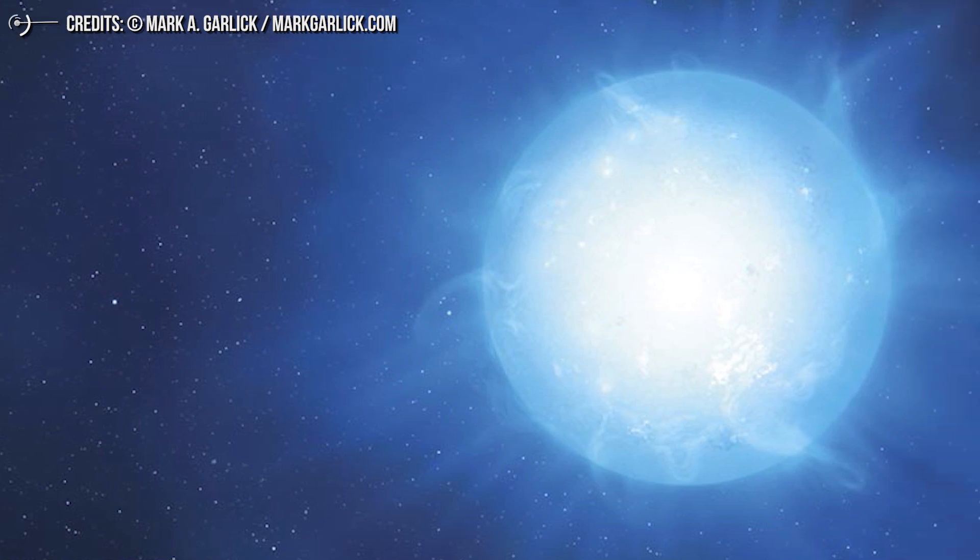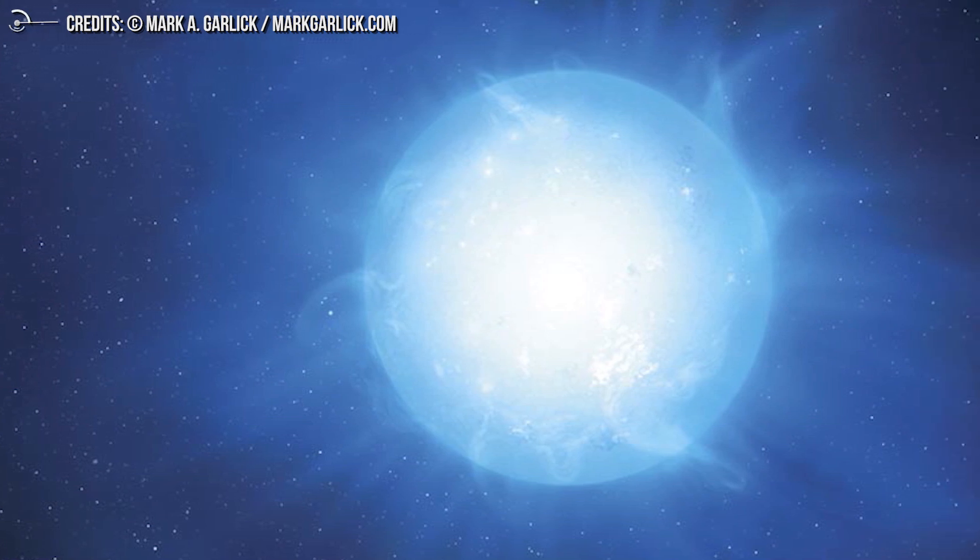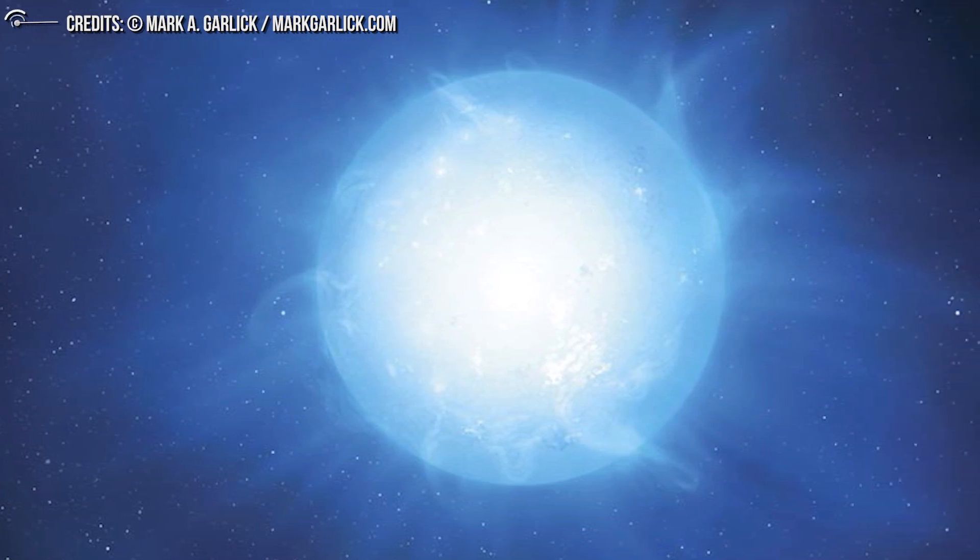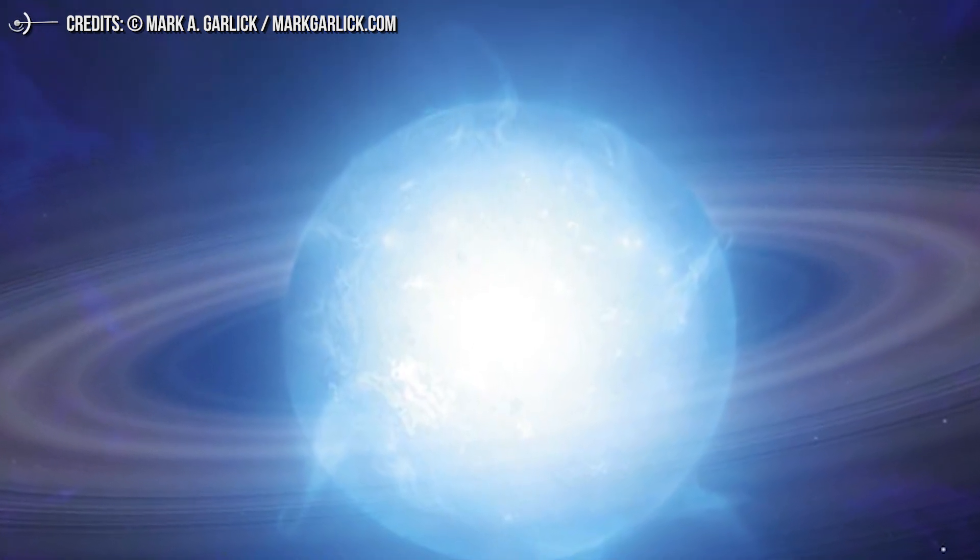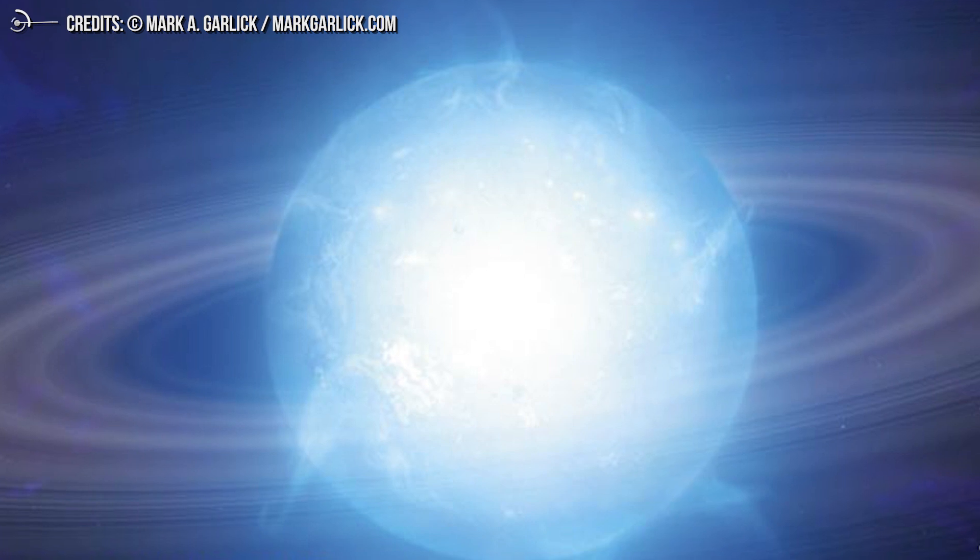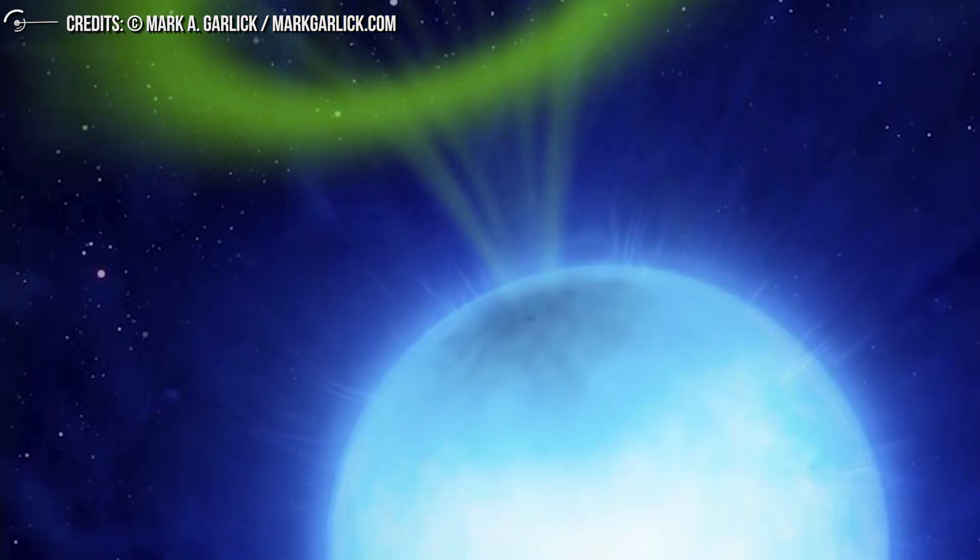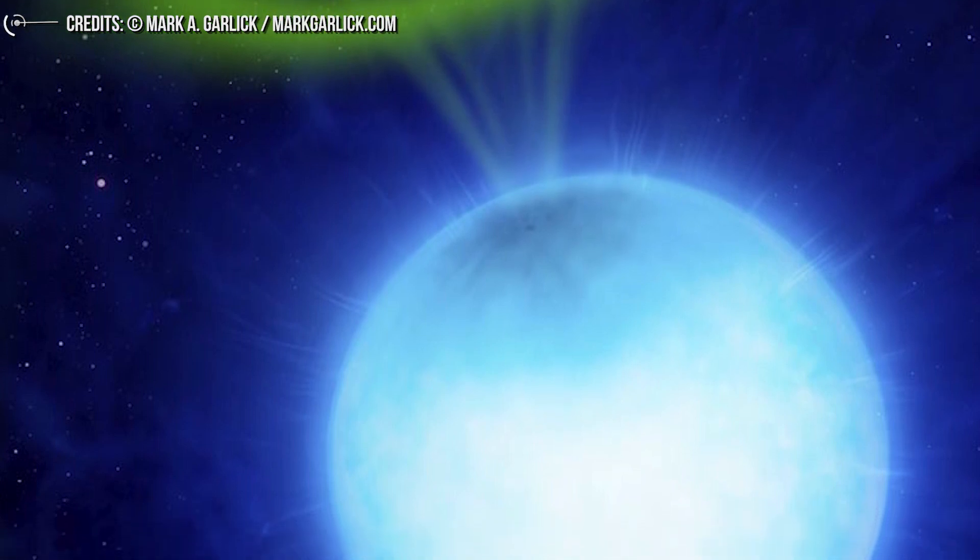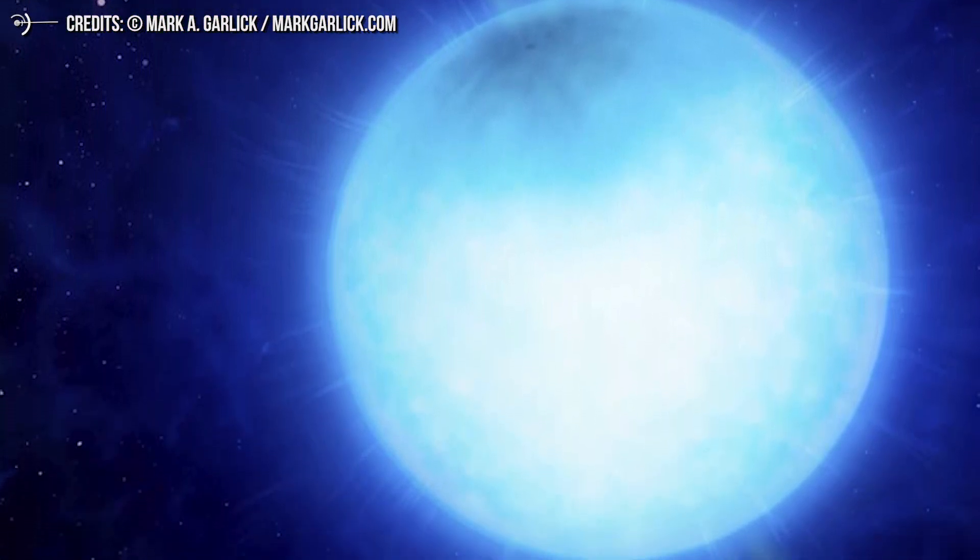In the case of BPM 37093, it was found to be as much as 90% crystallized, though estimates of this vary. So when you start subjecting carbon to high pressure and it begins to crystallize, you get diamonds, or something like it. It could be said that this white dwarf, or at least at some depth, essentially turns into a big, big, big diamond. Would you still call it a star?